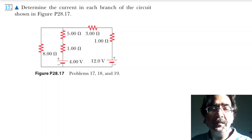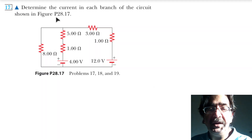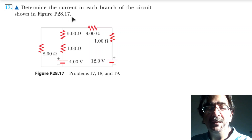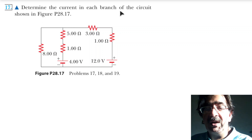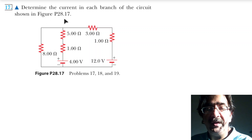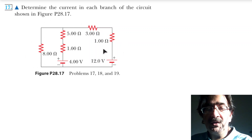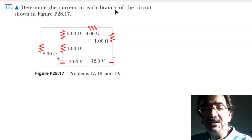We'll discuss the problem related to Chapter 28, Problem 117: determine the current in each branch of the circuit as shown in the figure. This figure will be given. So how will we find the current in each branch of the circuit?